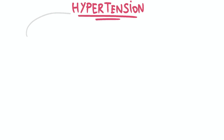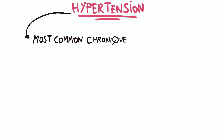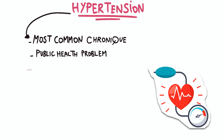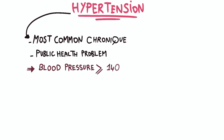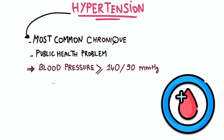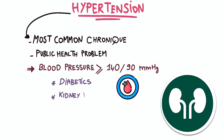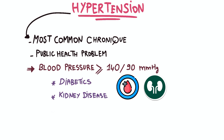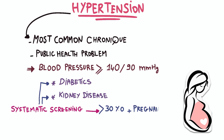Adult hypertension is the most common chronic disease and poses a significant public health problem. It is characterized by blood pressure values above 140 systolic or 90 diastolic, with a specific threshold for diabetic patients and patients with kidney disease. Systematic screening is recommended for patients over 30 years old, diabetics, and pregnant women to prevent severe complications.